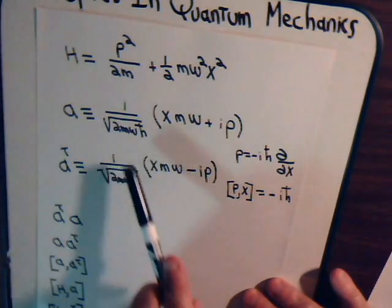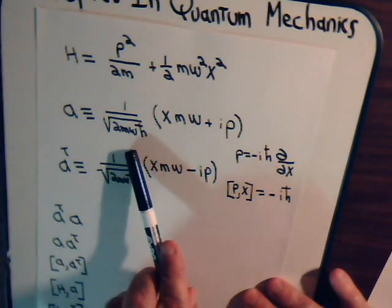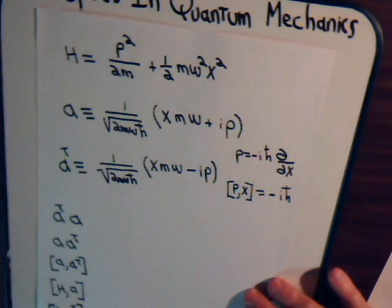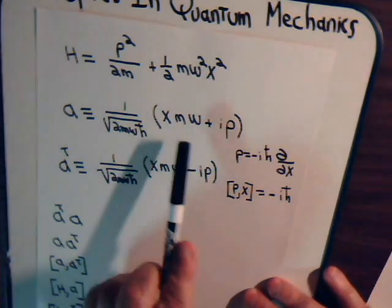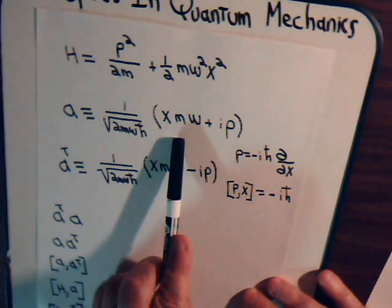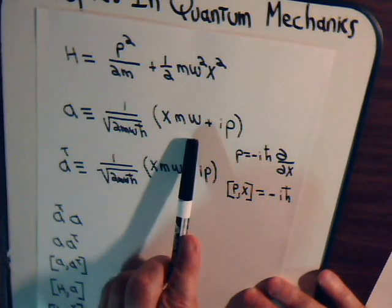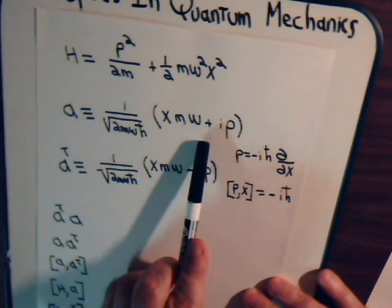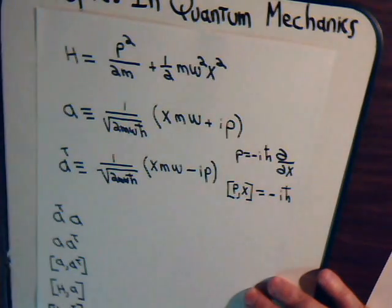This is 1 over the square root of 2m omega h-bar. That really is not the biggest part of the operator. Here we have x, that's the position, times the mass, times the equivalent of the angular velocity, plus i times the momentum.